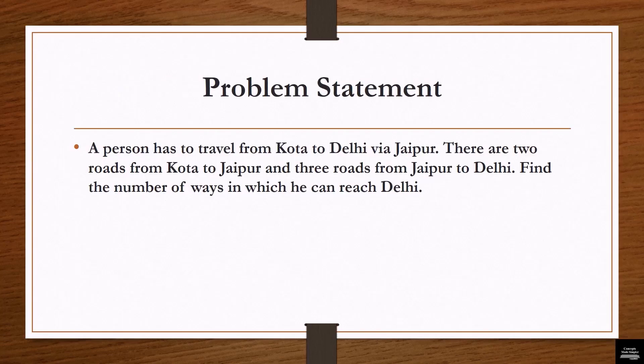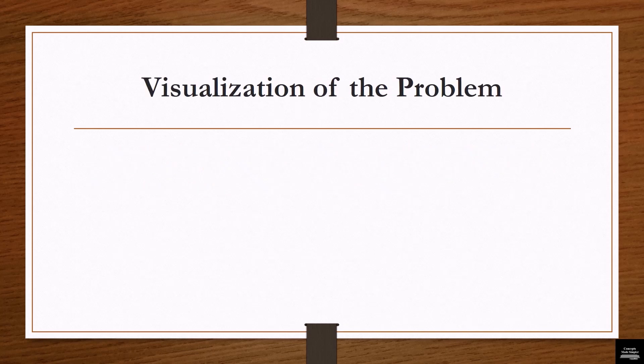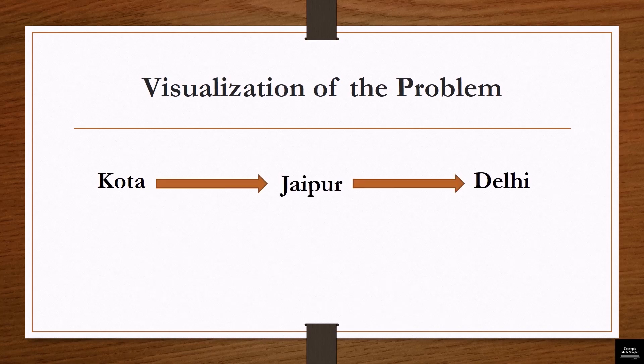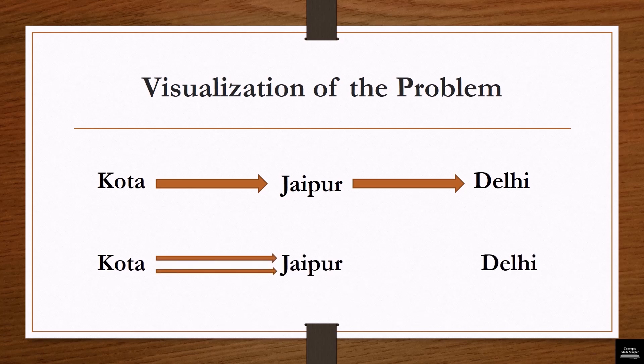Problem Statement: A person has to travel from Kota to Delhi via Jaipur. There are two roads from Kota to Jaipur and three roads from Jaipur to Delhi. Find the number of ways in which he can reach Delhi.